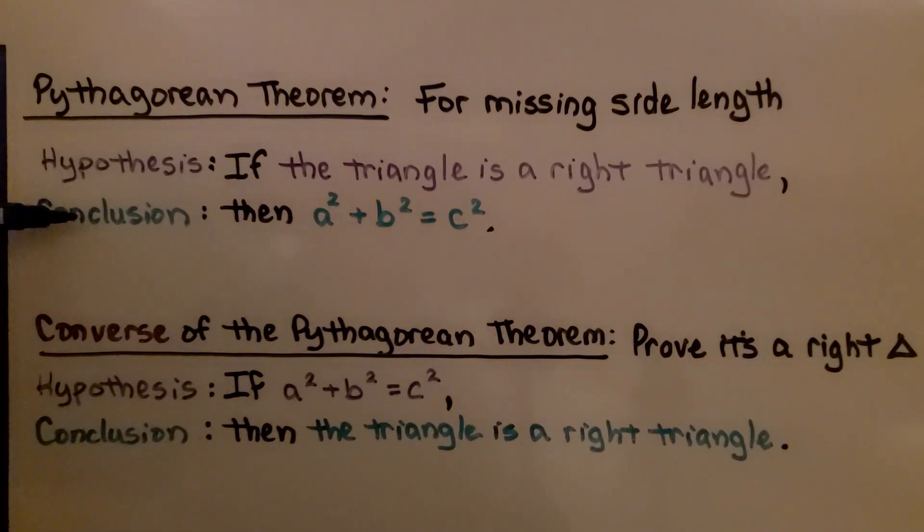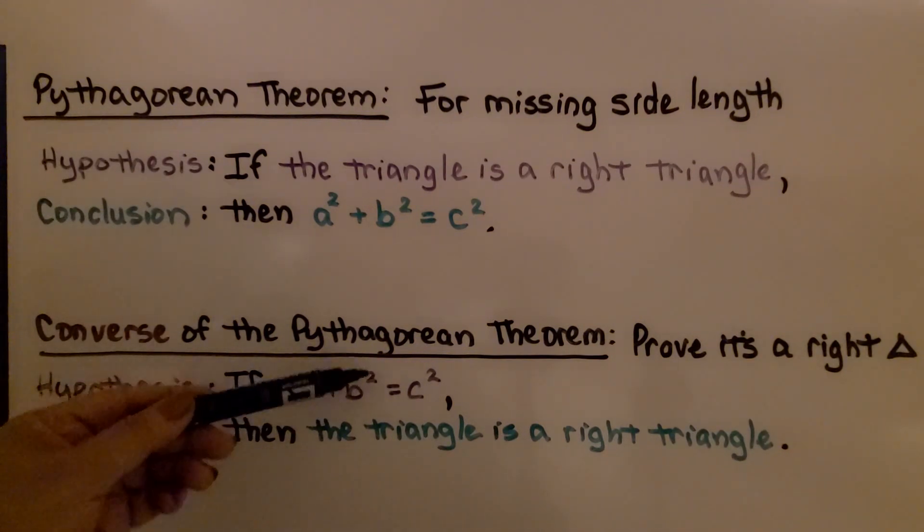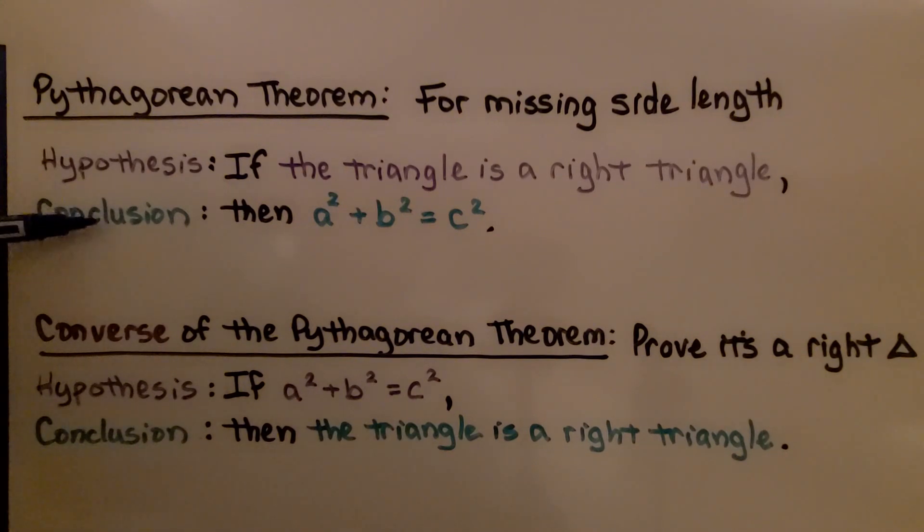If you look at the hypothesis and conclusion for each, you can see that they've swapped places. Here, the hypothesis is if the triangle is a right triangle. And here, the hypothesis is if a squared plus b squared equals c squared, which is this one's conclusion. And the conclusion for this one is the hypothesis for the Pythagorean theorem. The converse is a flipped around version of the Pythagorean theorem.